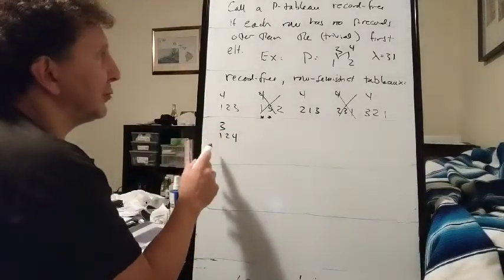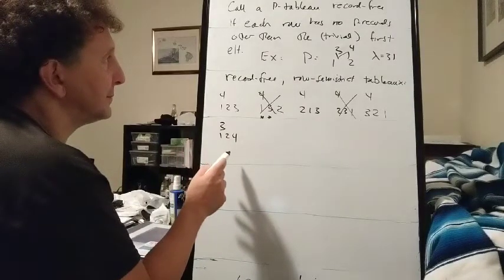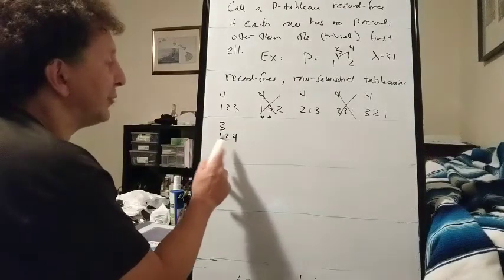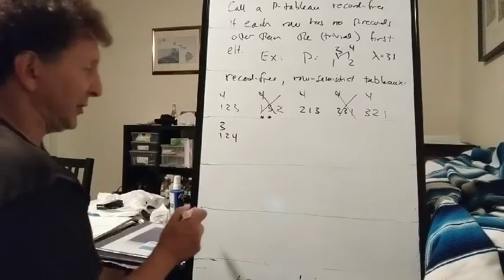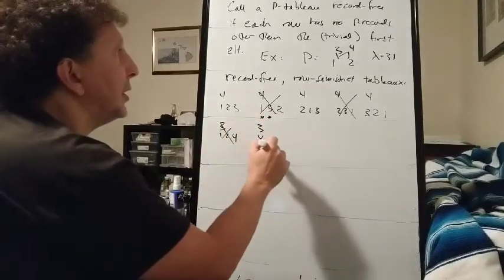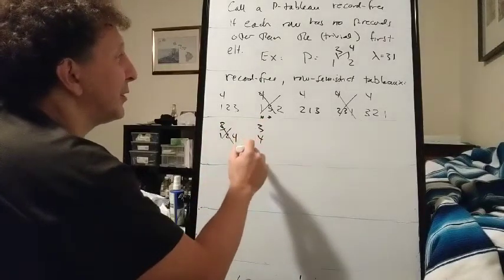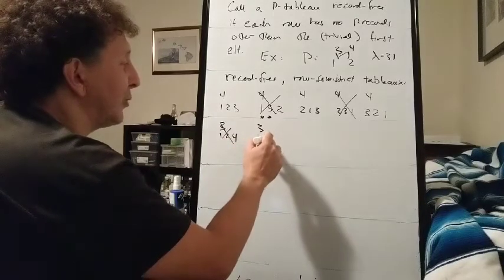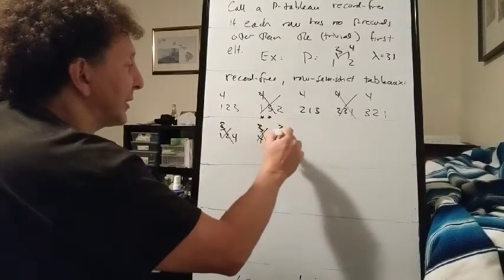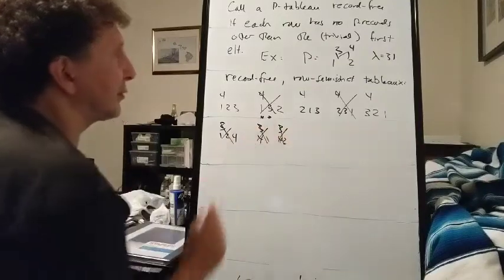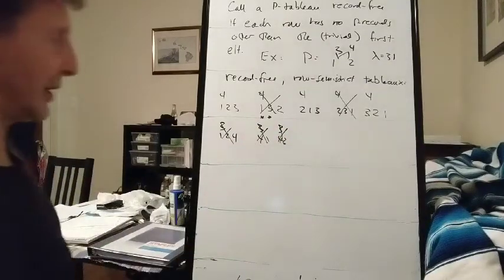Now, if we have 3 by itself and 1, 2, and 4, 4 is greater than 1 and 2, so it's going to be a record wherever it appears, so it has to appear first. But then, since it's greater than 1 and greater than 2, we can't have 1 next and we can't have 2 next. So I think 3 is just not going to be able to be in the second row by itself.